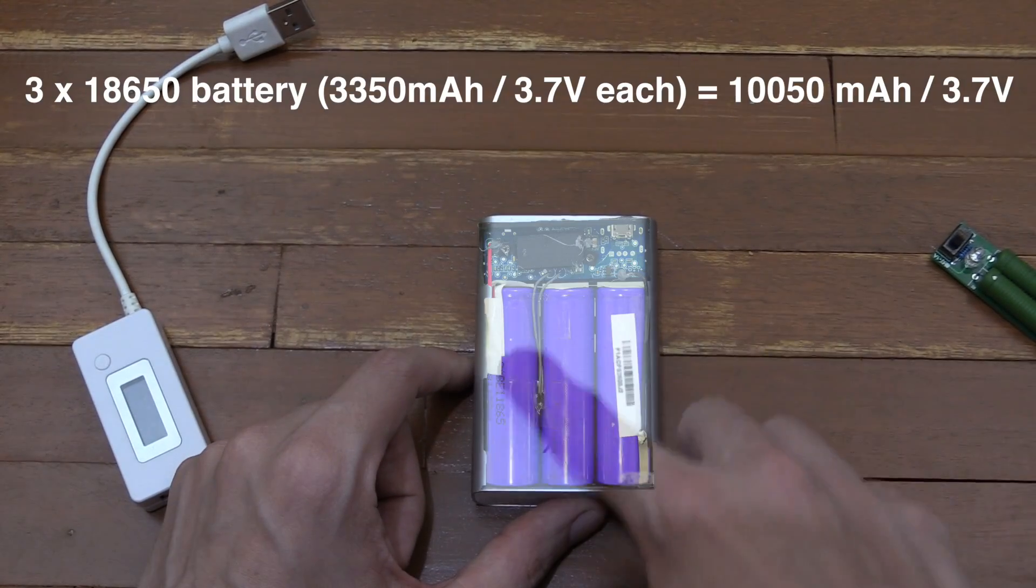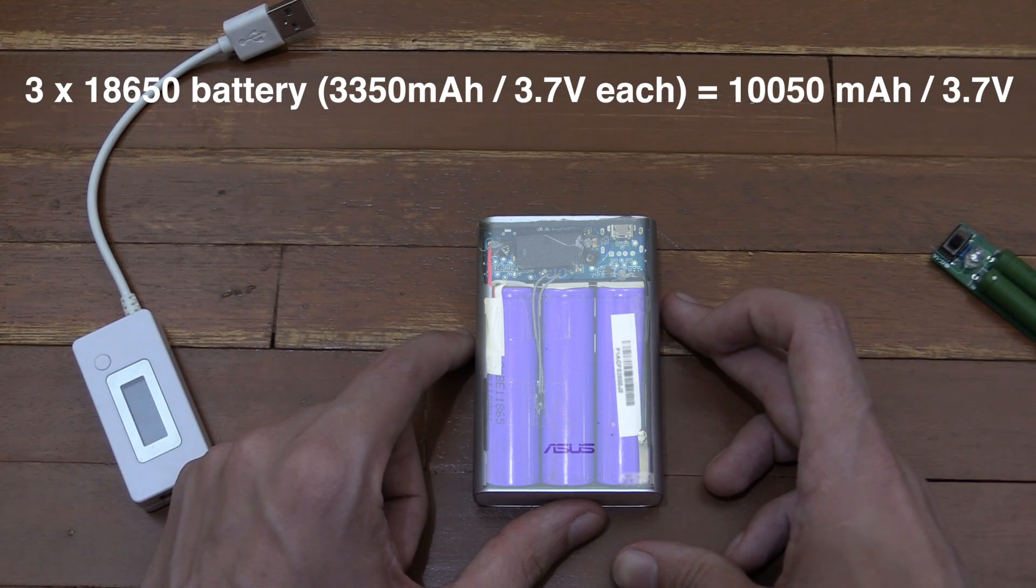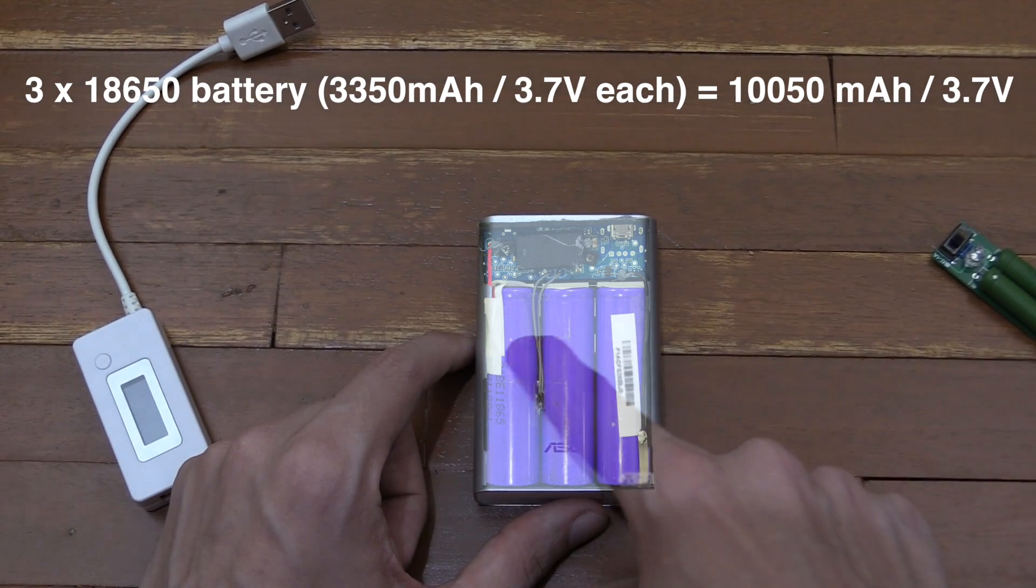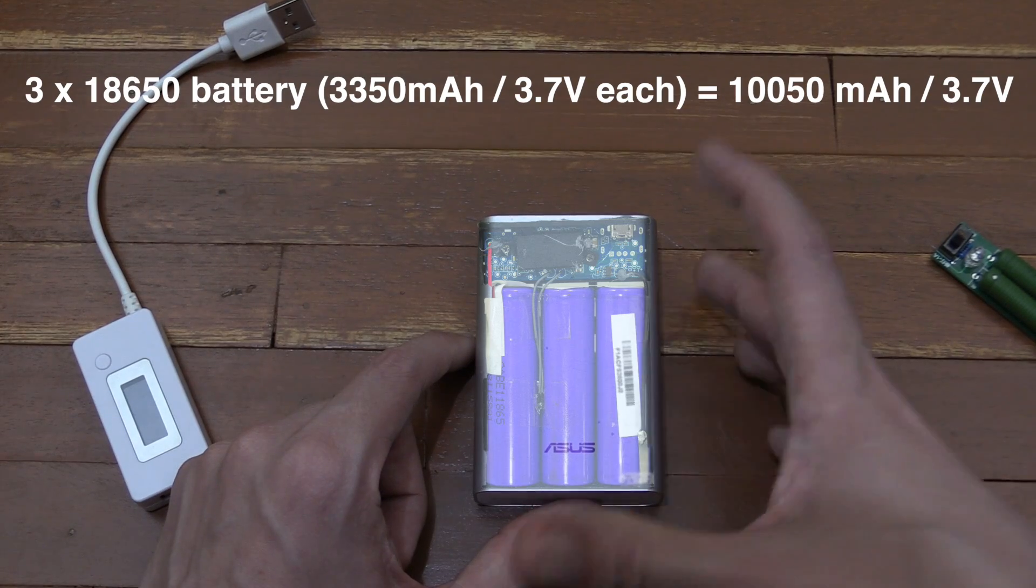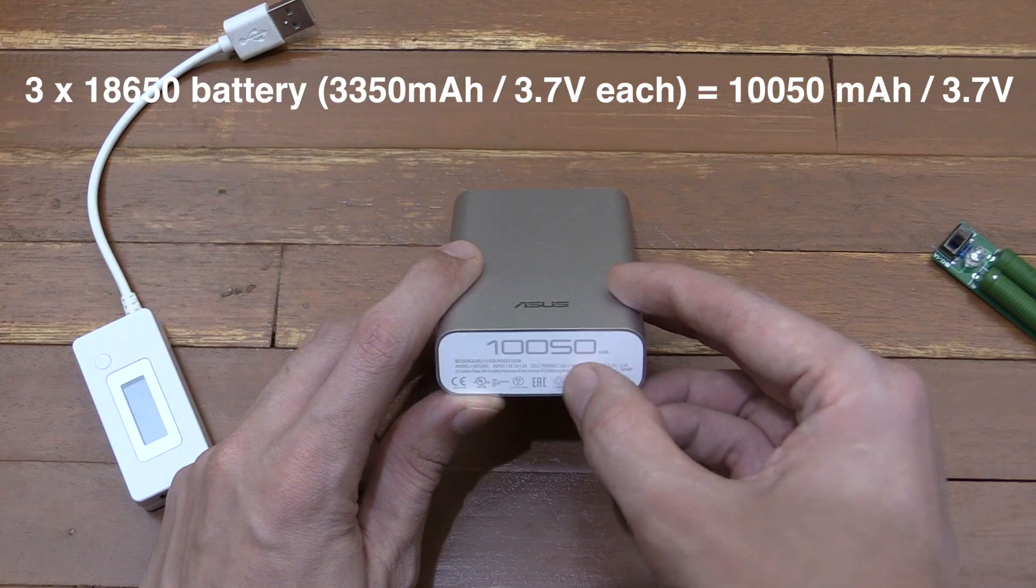But let's have a think for a minute about what a power bank is actually rated on. Now inside this power bank are three battery cells, 18,650 batteries with voltages of 3.7 volts. So that means we've got three cells, and each one is around 3,350 milliamp hour, giving us the total of 10,050.